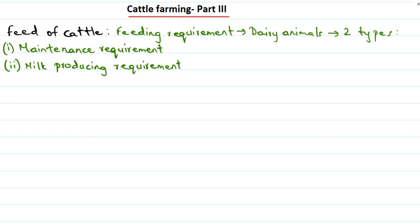In the maintenance requirement, the animals require food to perform all the basic functions of life. The second type of requirement is the milk producing requirement — that is, it includes the type of food required during the lactation period.